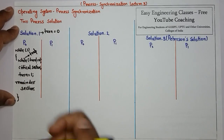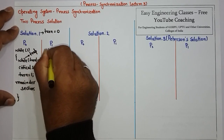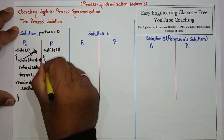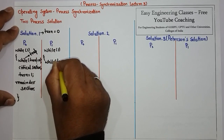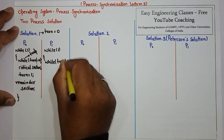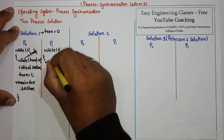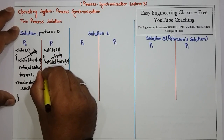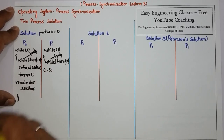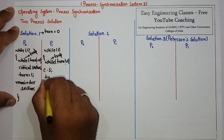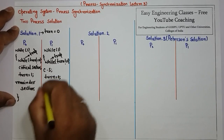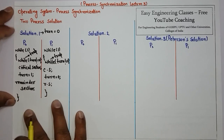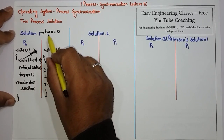Now let's see the code for P1. Similarly, the structure is while(1). The condition is while turn is not equal to one — if turn is not one, the trap occurs. Then the critical section follows, and in the exit section P1 sets turn equal to zero, followed by the remainder section. This completes the first solution using the variable turn.